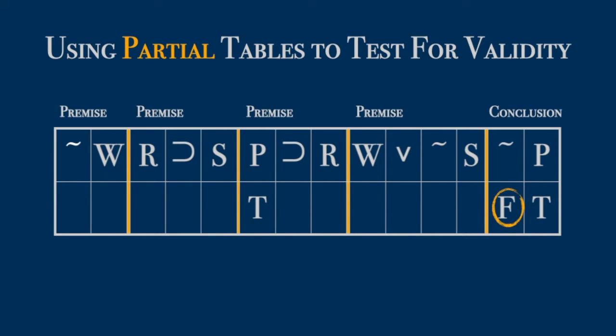Order doesn't matter, so let's start over here where it looks easy. We need the premise to be true, so we assign false to W. All done—we have a true premise. Of course, we assigned false to W, so we need to do the same for any other W in the table. I said it doesn't matter which premise we tackle first, but this one worries me.